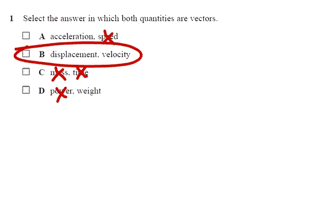Select the answer in which both quantities are vectors. I've crossed out speed, mass, time and power because they're all not vectors, and that leaves only B as the correct answer.